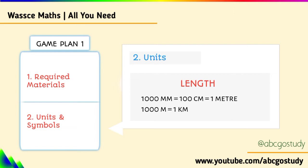Now, talking about units and symbols, under length you should note that 1000 millimeters equals 100 centimeters, which equals 1 meter. You should also know that 1000 meters equals 1 kilometer.